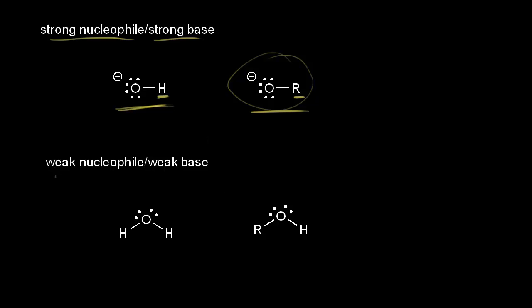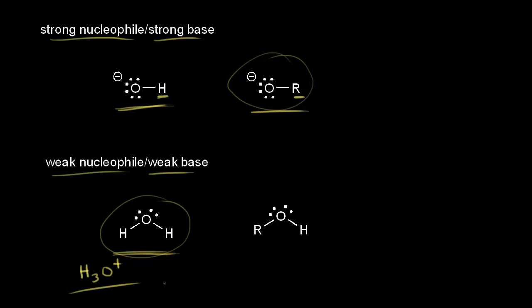Our fourth and last category is weak nucleophile, weak base. The water molecule is a weak nucleophile — it does not have a negative one formal charge on the oxygen. And water is a weak base: the conjugate acid would be H3O+, and we know the hydronium ion is fairly acidic, so it would have a weak conjugate base. If you replace one of the hydrogens with an alkyl group, you form an alcohol, which is also a weak nucleophile and a weak base.